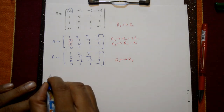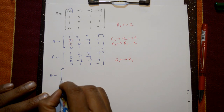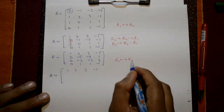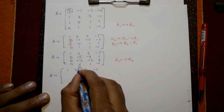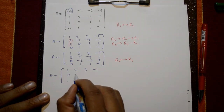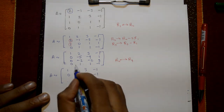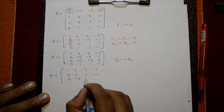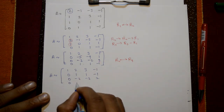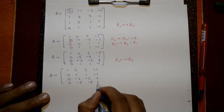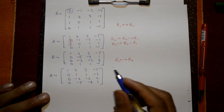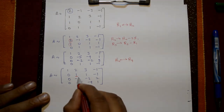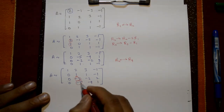After interchanging R2 and R4, the equivalent matrix is: first row as before; second row becomes 0, 1, 1, -1; third row stays 0, -2, -2, -2; fourth row becomes 0, -5, -9, 1. The leading number is now 1, and below it we have -2 and -5 to zero out.